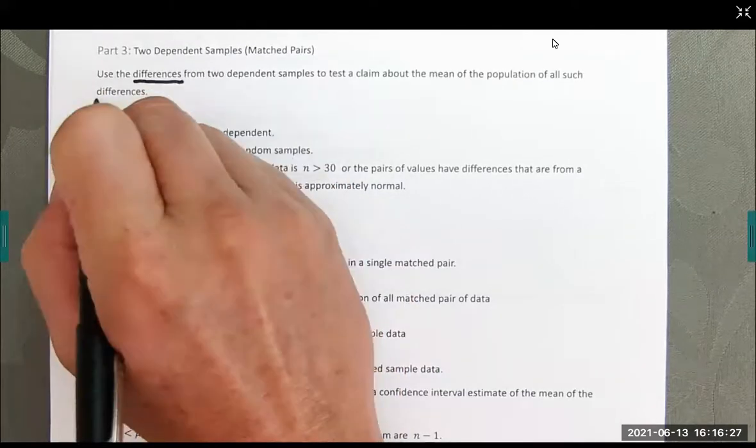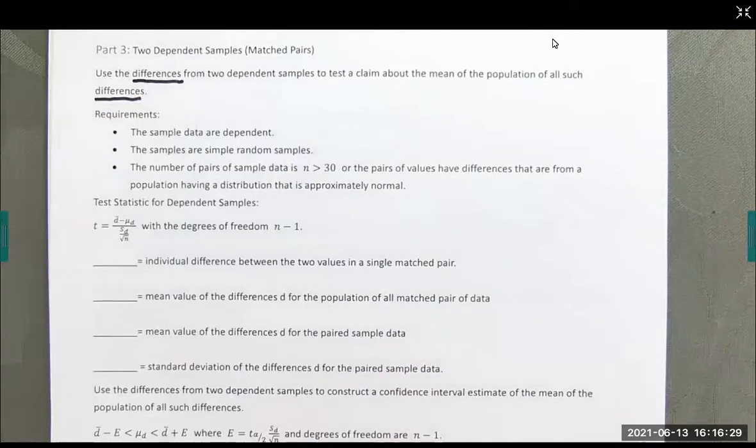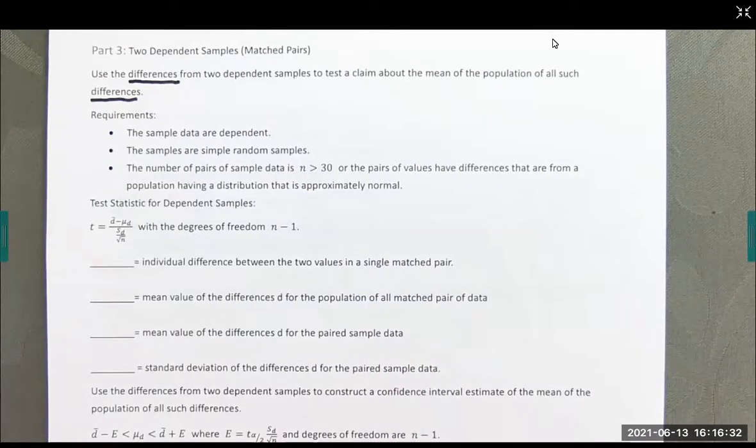And the key to this one is differences. Difference in our world means subtract. Requirements: The sample data are dependent, the samples are simple random samples, and the number of pairs of sample data n is bigger than 30, or the pairs of values have differences that are from a population that's normally distributed.